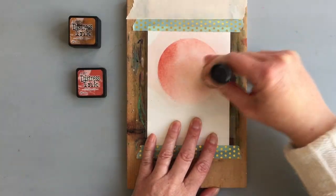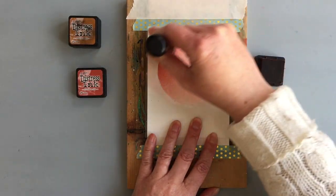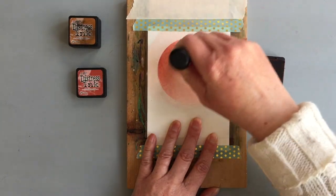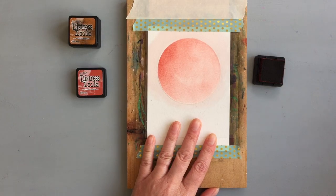This time I started with the darker ink and applied it over the whole circle. Again, I did not apply the ink evenly because I wanted to have some shade variation.